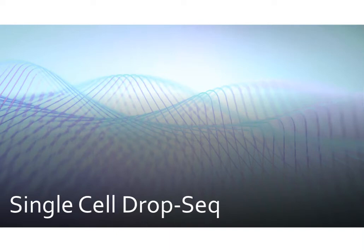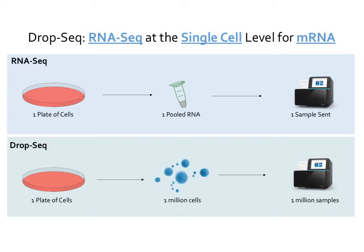Today we're going to focus on single-cell DROP-seq. DROP-seq is basically RNA-seq at the single-cell level, looking specifically at mRNA. We talked about RNA-seq last week — that's when you look at mRNA sequences in a sample and get an idea of what RNAs are present in your whole sample. The difference here is that we're looking at single cells rather than all pooled cells, and specifically at mRNA rather than all RNAs in the cell.